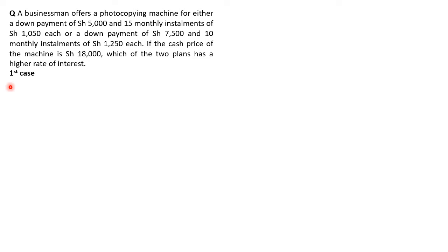In our first case, we need to identify the principal. The principal is borrowed money, and normally it's the difference between the cash price and the deposit. So in the first case, if the person is making a down payment or deposit of $5,000, and the cash price is $18,000, it means that person is borrowing $13,000.